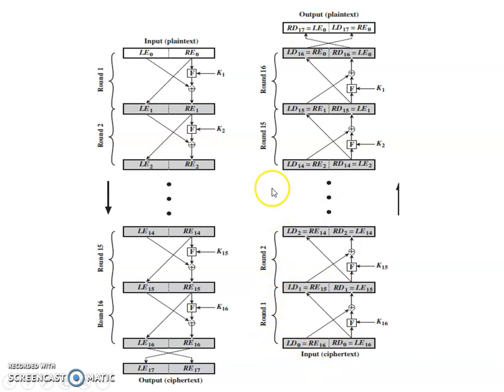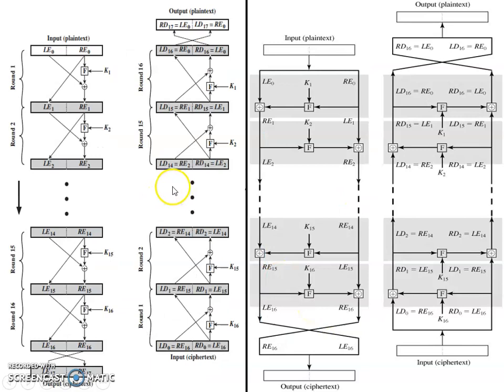The decryption part works from bottom to top through rounds 1 to 16, using the same process as encryption. The input is LD0 and RD0, and it performs the same process as encryption, finally generating LE0 and RE0 — which is the output plaintext. Importantly, both the encryption and decryption diagrams are the same, so for examination purposes you only need to remember one diagram.